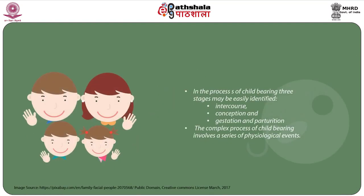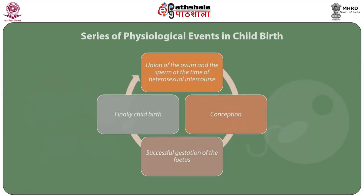In this module we will discuss the Davis and Blake Intermediate Determinants of Fertility. In the process of childbearing, three stages may be easily identified: intercourse, conception, and gestation and parturition. The complex process of childbearing involves a series of physiological events, starting with the union of the ovum and the sperm at the time of heterosexual intercourse, resulting in conception and terminating with the successful gestation of the fetus and, finally, childbirth.